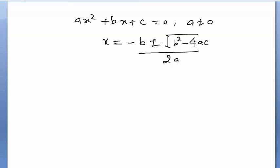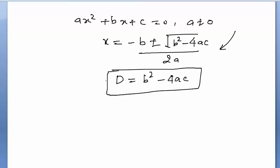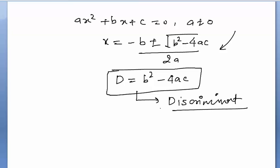For the standard form ax² + bx + c = 0, the roots depend on the formula. In this formula, D is defined as b² − 4ac, so the roots depend on D. D is called the discriminant.